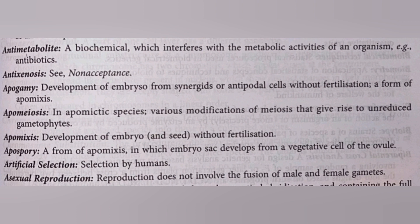The next term is epigami. We all know that the embryo gets developed by the fusion of sperm cells and egg cells, but if the embryo is developed from synergids or antipodal cells without fertilization, then it is known as epigami, which is a part of epomyxis. Next is epomeiosis — in apomictic species, various modifications of meiosis give rise to an unreduced gametophyte.